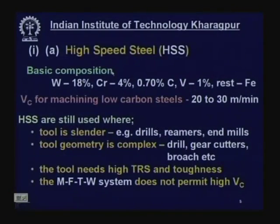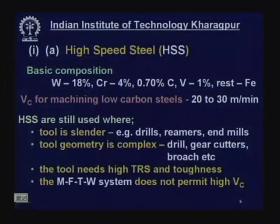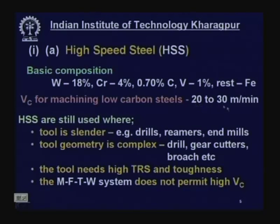The basic composition of high speed steel is: tungsten 18%, chromium 4%, carbon 0.7%, vanadium 1%, rest iron. Tungsten and chromium were added to iron for improvement in hardness, hot hardness, wear resistance, and abrasion resistance; vanadium for further wear resistance and hot hardness. The cutting velocity for machining low carbon steel was only 20 to 30 meters per minute.